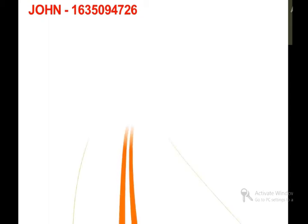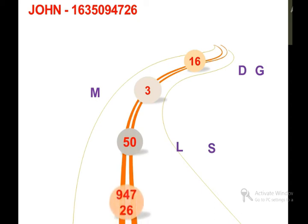This is also ten numbers. John and his number. We have to imagine the number. We have 1 - D or T, 6 - G, 3 - M, 5 - L, 0 - S, 9 - B or P, 4 - R, 7 - K or C, 2 - N, 6 - G. We will use D, G, M, E, L, S.